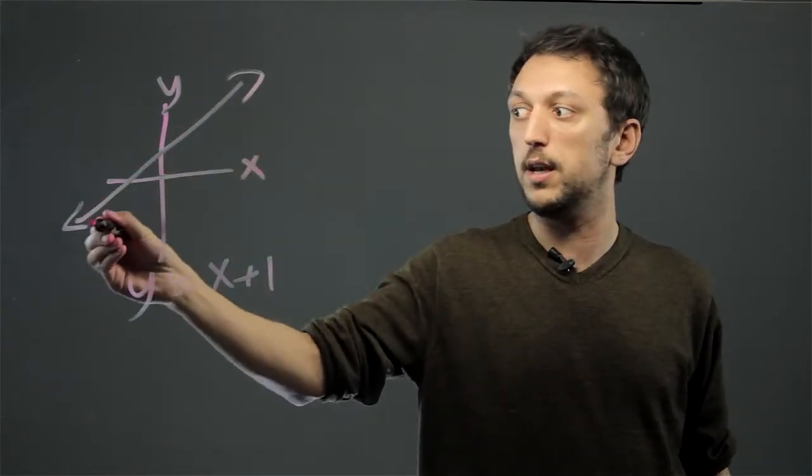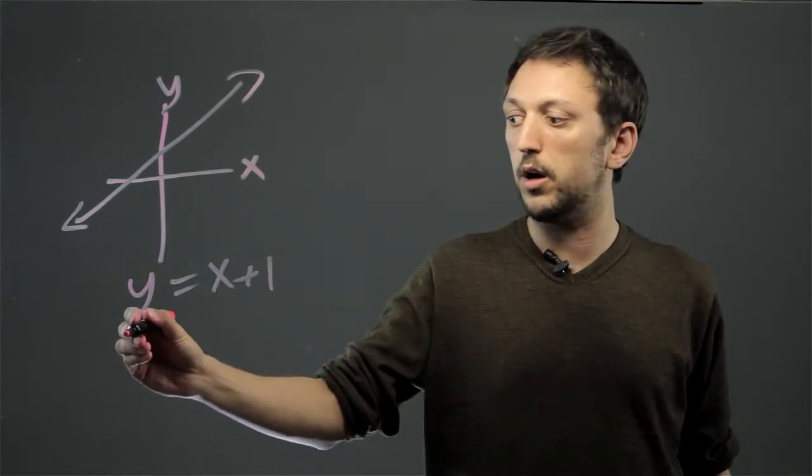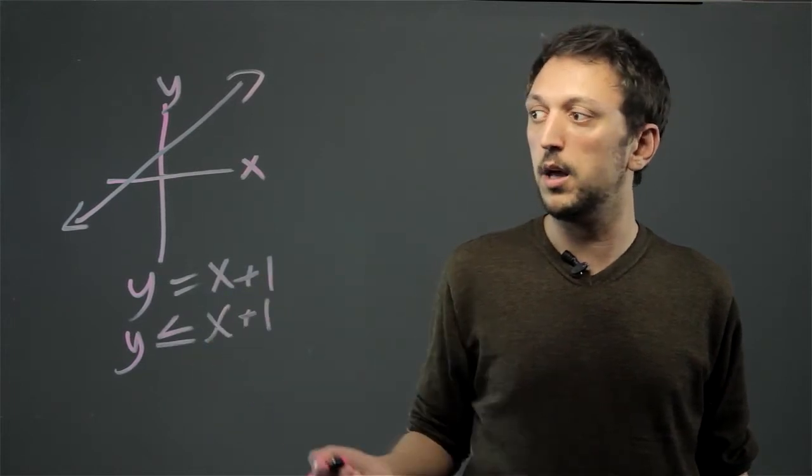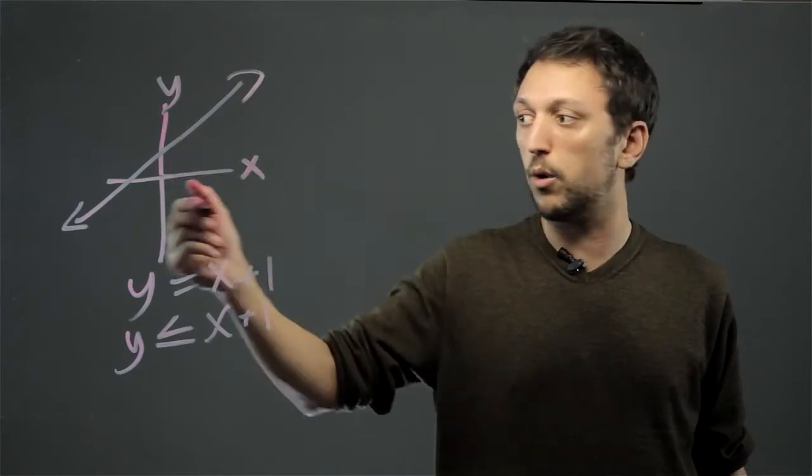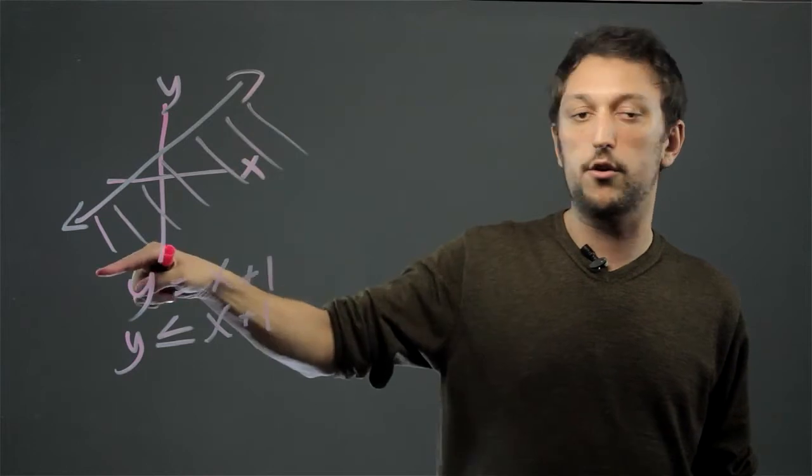going towards infinity in both directions. Now, what would be similar with an inequality is if we said y is less than or equal to x plus 1, in which case this line would then become the border for a range going out towards infinity all under this line.